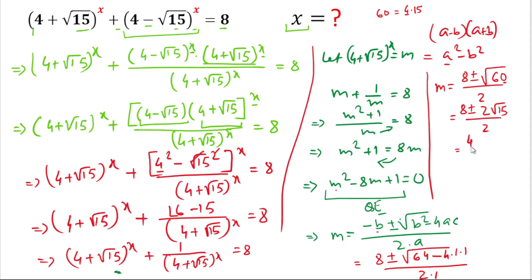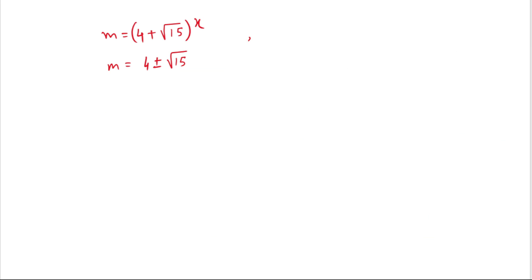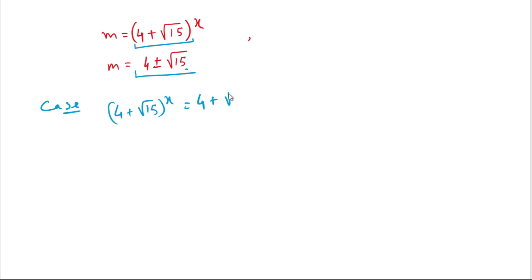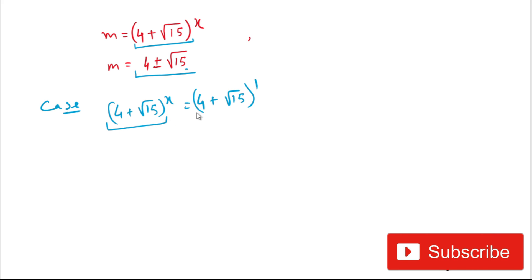So the value of m is 4 ± √15. Since m = (4 + √15)^x, we now consider two cases. Case 1: taking the positive value, (4 + √15)^x = 4 + √15. This can be written as (4 + √15)^x = (4 + √15)^1. Since the bases are the same, we equate the powers: x = 1. So the first solution is x = 1.